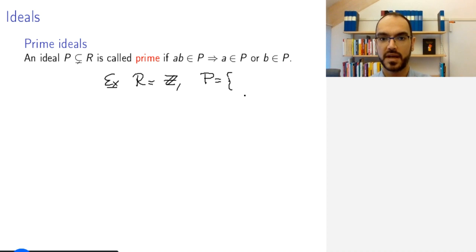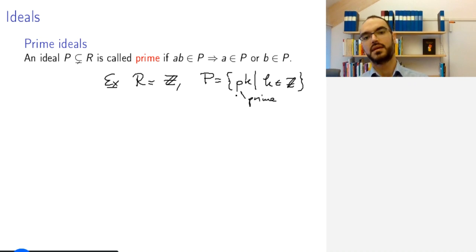The prototypical example is if you take as your ring the integers and you take the ideal generated by some prime p—the ideal pk where k is an integer. This is just the definition, one of the definitions of a prime number, more or less, that if the prime number divides a product it will divide one or the other. Multiples of three satisfy this property but multiples of six don't.